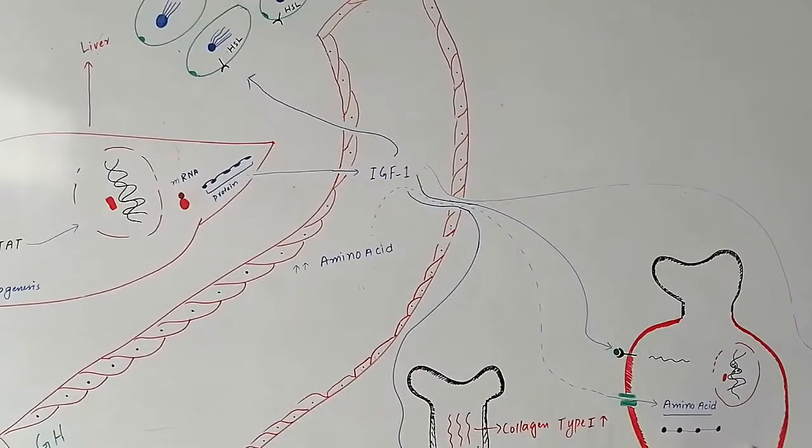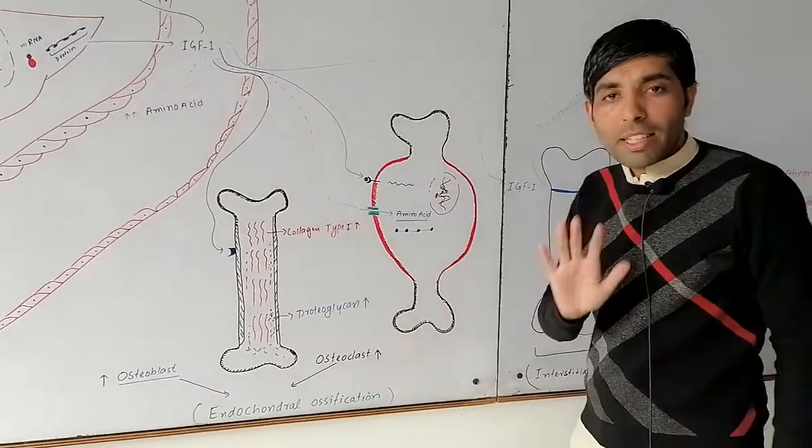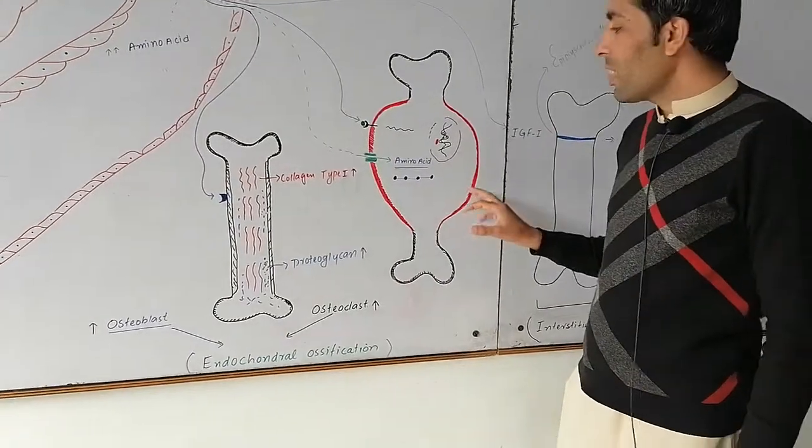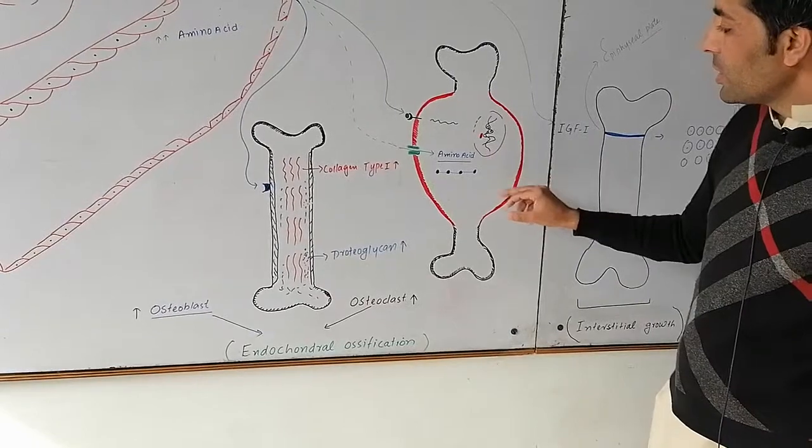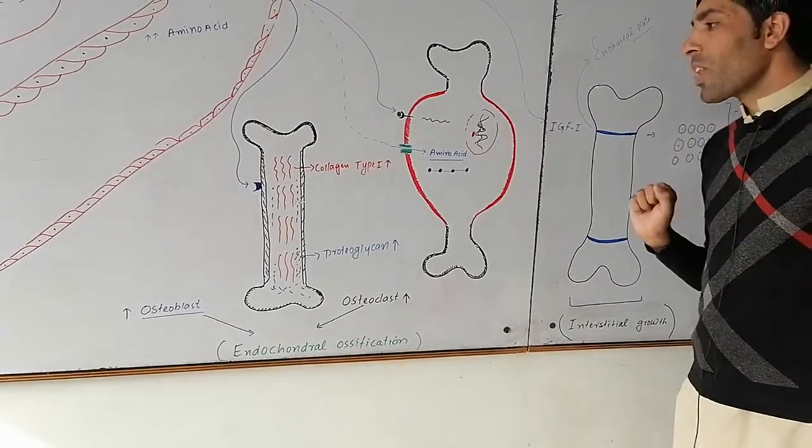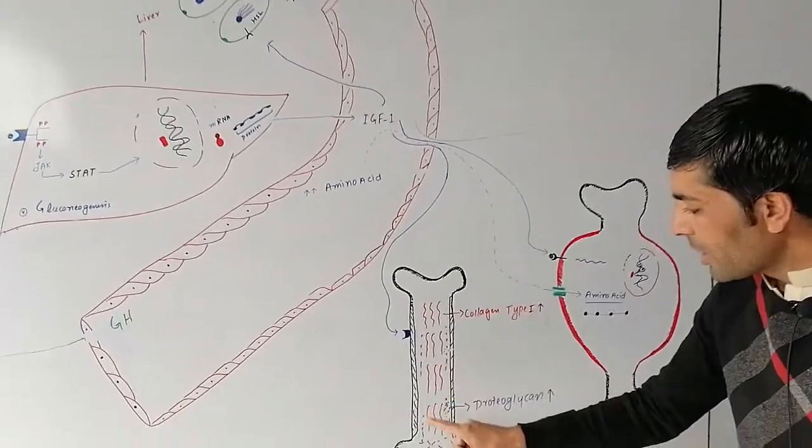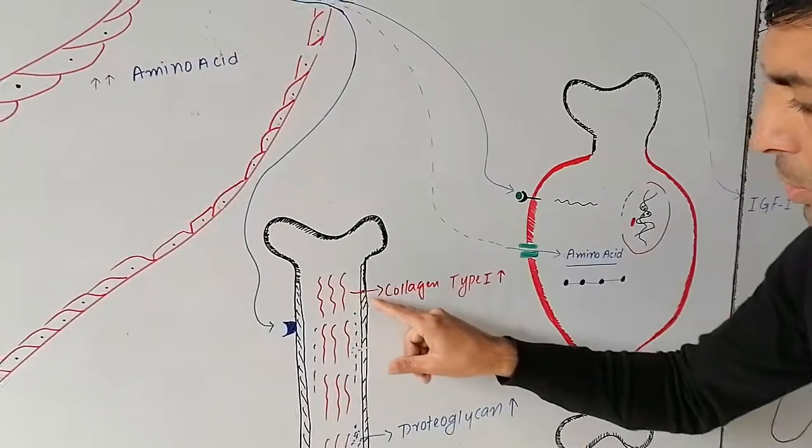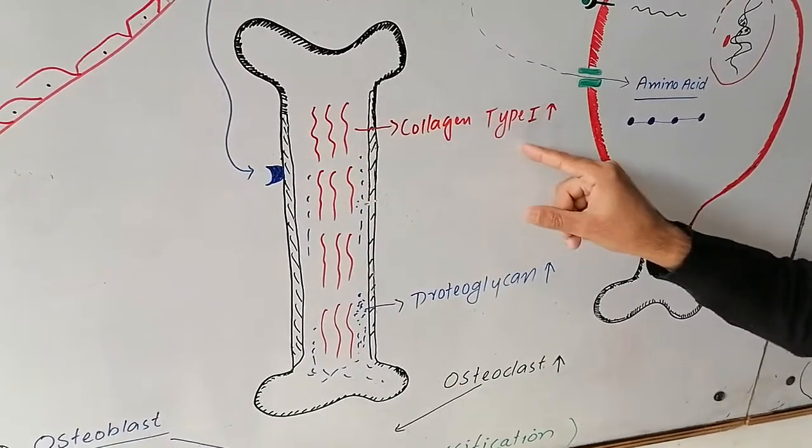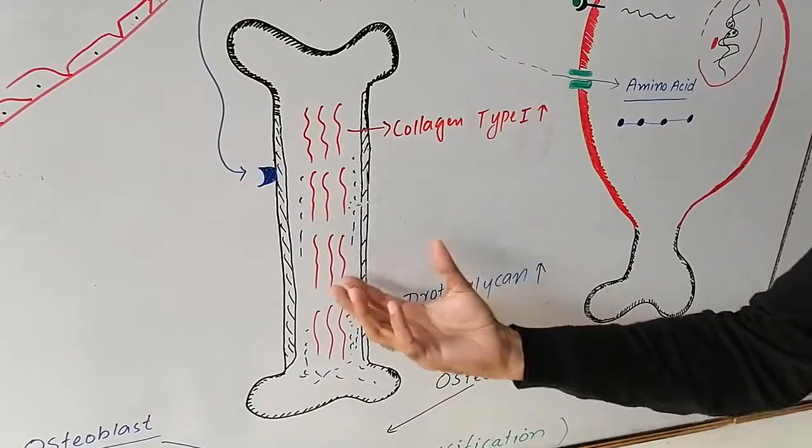This causes muscle hypertrophy. Remember, not hyperplasia - the number of cells stays constant, but muscle tissue size increases while the number of muscle cells or fibers remains constant. IGF type 1 also acts on bone, specifically on collagen. Bone contains collagen type 1 protein. The number of collagen type 1 fibers increases, along with proteoglycans in the ground substance of connective tissue.